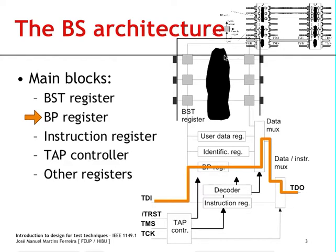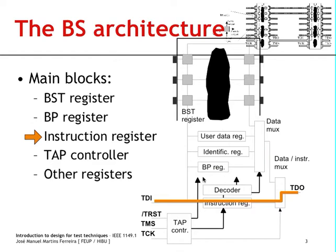Both the boundary scan register and the bypass register are mandatory, and every boundary scan compliant circuit will support the existence of these two blocks. The third block which you can also be sure of finding is the instruction register.